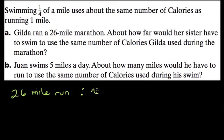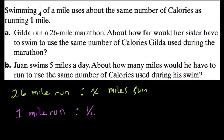So we want to find how many miles you should swim to equal the same number of calories burnt on the run. Well, we could use a ratio here because we know that a one-mile run is proportional to one-fourth of a mile swim, and this is always going to be constant.